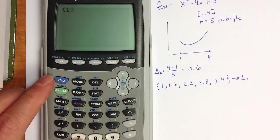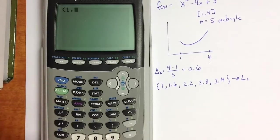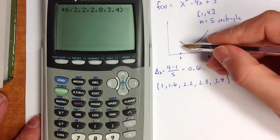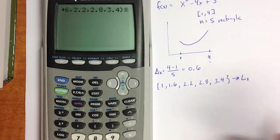Then we can enter 1, comma, 1.6, comma, 2.2, comma, 2.8, and comma, 3.4. Since we're using 5 subintervals, 5 rectangles, we have 5 points in our list.